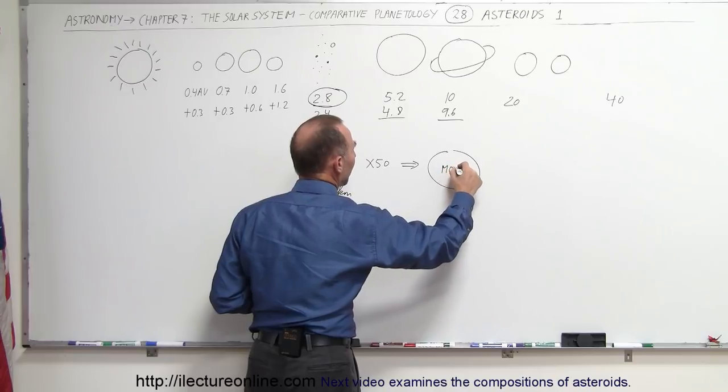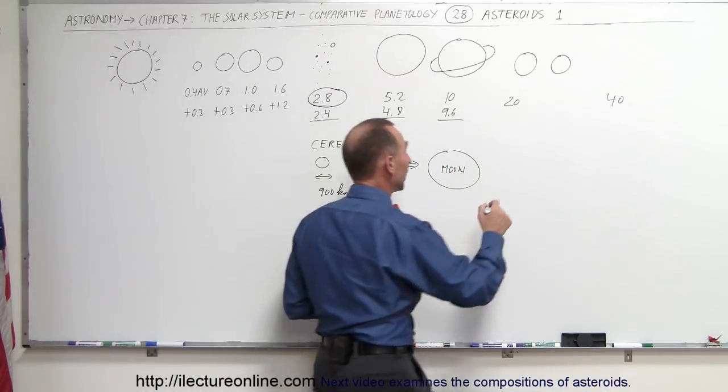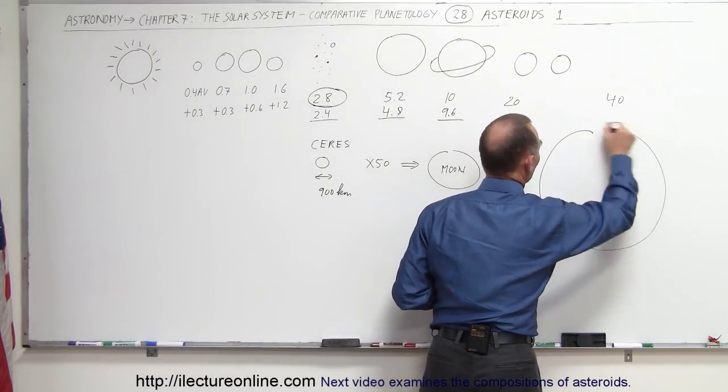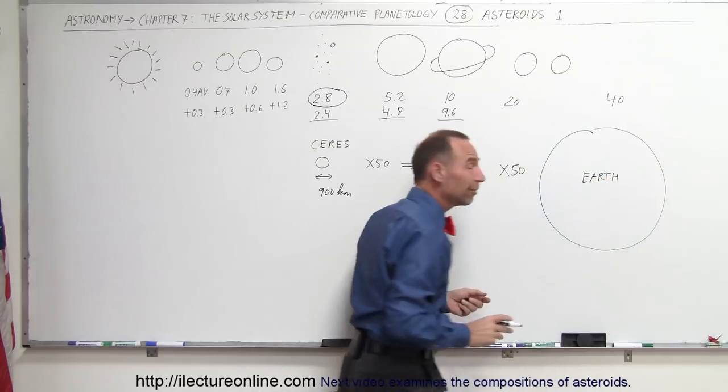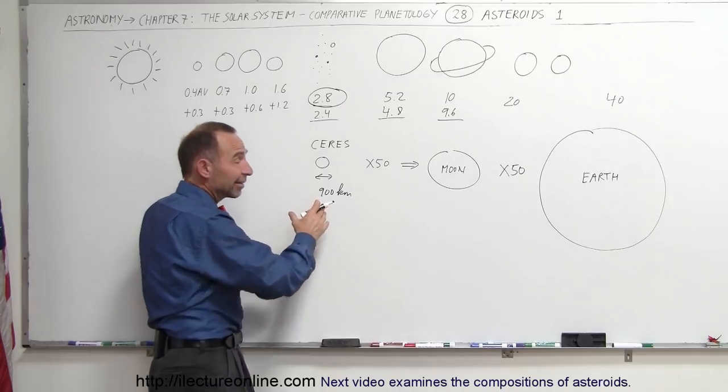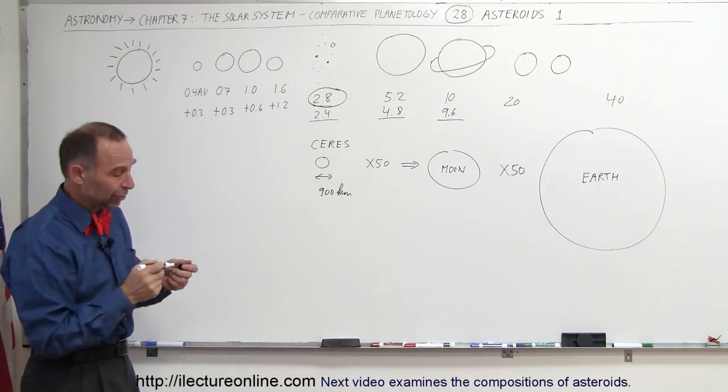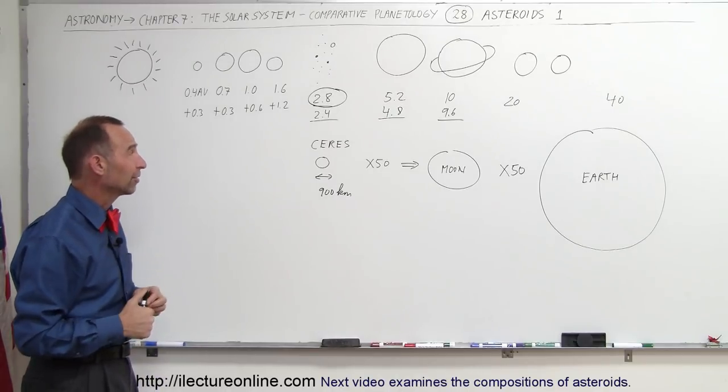Well it turns out, you would need about 50 times the mass of Ceres to get the mass of the Moon. So the Moon has a mass about 50 times the mass of Ceres, and if you multiply the mass of the Moon by 50, you get the Earth. So you can see that relative to the Moon and relative to the Earth, even the very largest of all the asteroids is relatively small. It's kind of a small little dwarf compared to the Moon, and minuscule compared to the Earth, because the mass of the Earth would be more than 2,000 times the mass of Ceres.